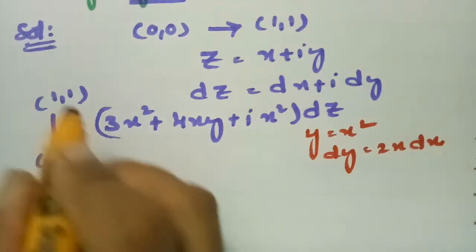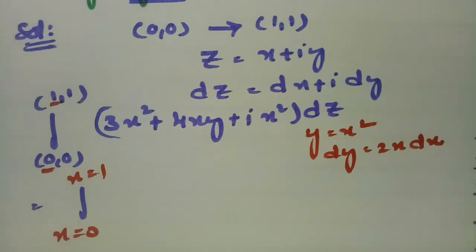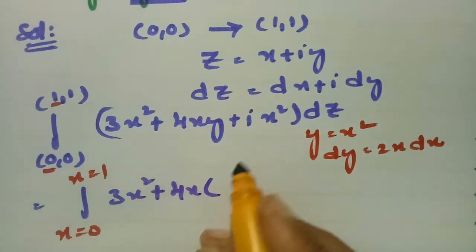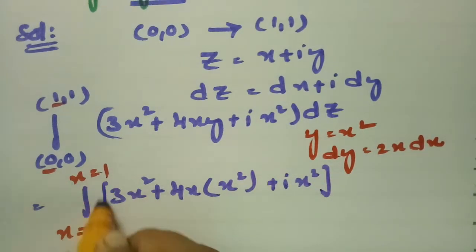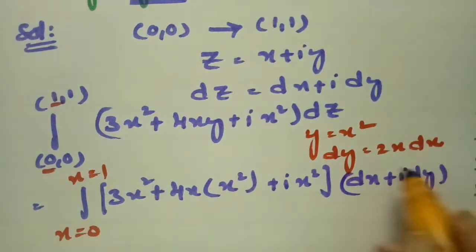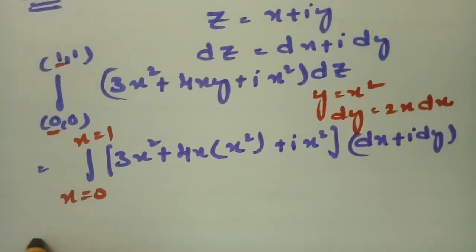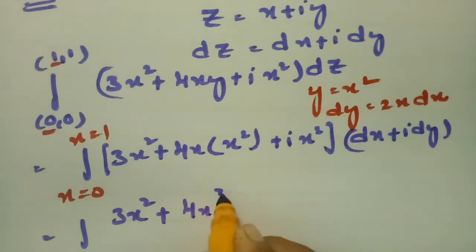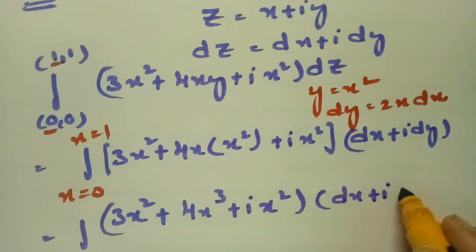The x limits are from 0 to 1. Substituting y = x², the integrand becomes 3x² + 4x·x² + i·x², and dz = dx + i·dy. Substituting dy = 2x dx, dz = dx + i·2x dx.